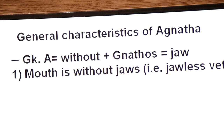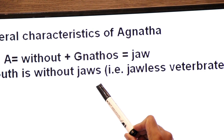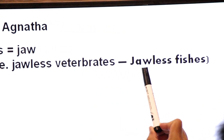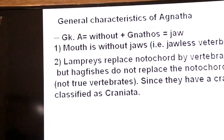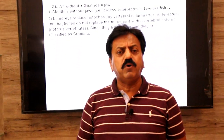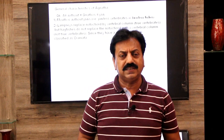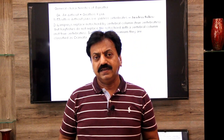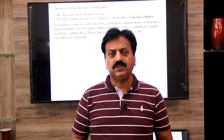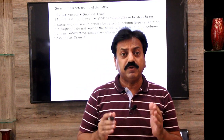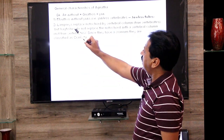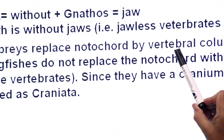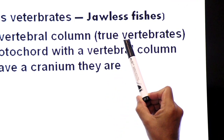General characteristics of Agnatha: 'a' means without, 'nathos' means jaw — mouth is without jaws, so they are known as jawless vertebrates, also called jawless fishes, though they are not true fishes. In lamprey, the notochord is replaced by the vertebral column, making it a true vertebrate. However, in hagfish, the notochord is not replaced — it is not a true vertebrate, but cranium is present in hagfish.